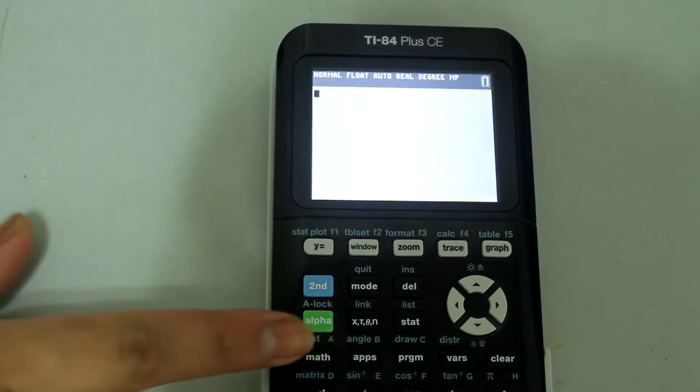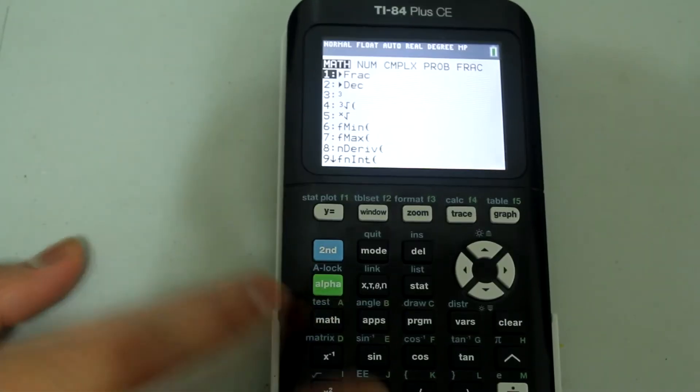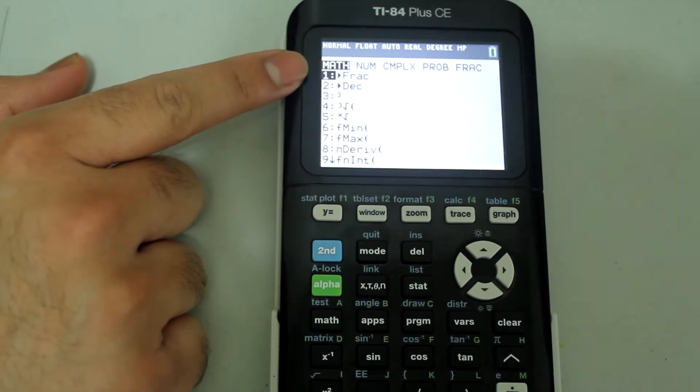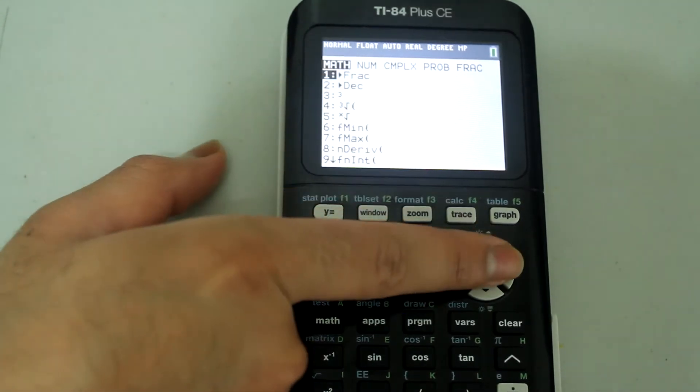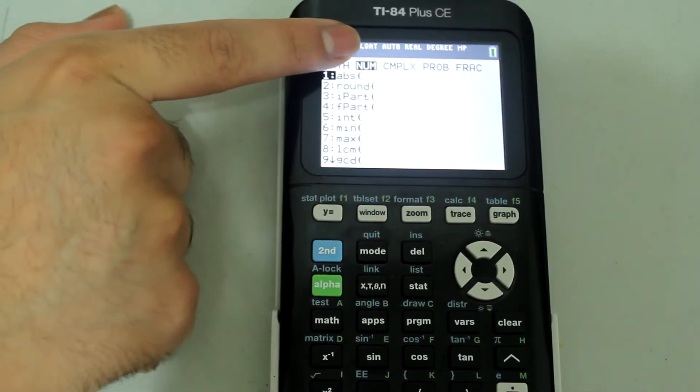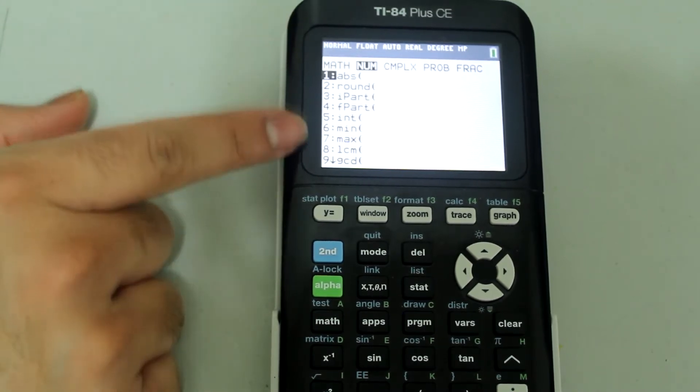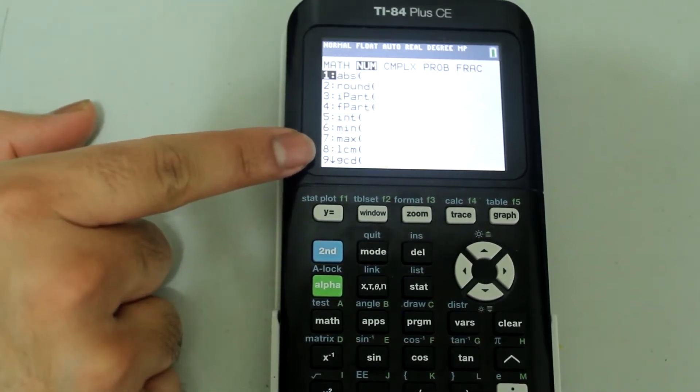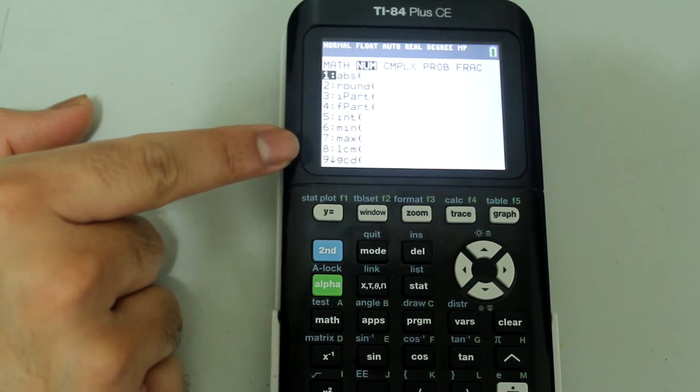First press the MATH button and then this screen comes up. Use the right arrow to arrow over to the NUM tab and then select the option that says LCM which is number 8.